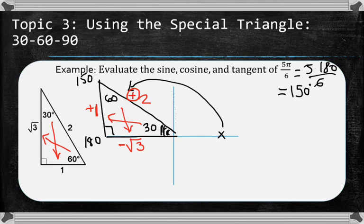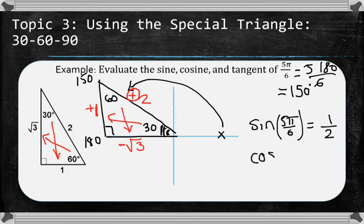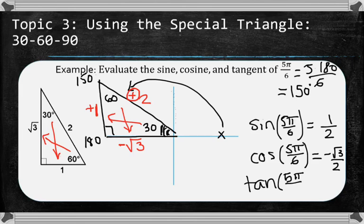Now we just, all we have to do is evaluate sine, cosine, and tangent. So the sine of 5π over 6 is going to be given by opposite over hypotenuse. So 1 over 2. The cosine of 5π over 6 is going to be given by the adjacent over hypotenuse. So negative root 3 over 2. And then the tangent of 5π over 6 is going to be given by the opposite over the adjacent, which is 1 over negative root 3. And you can rationalize to your heart's content, but as we discussed in a previous lesson, you do not need to do that for the AP exam. It is perfectly correct to have a root on the denominator.